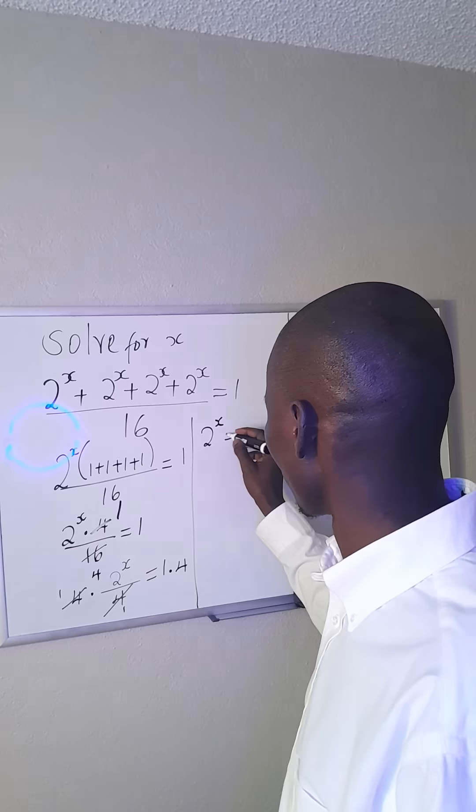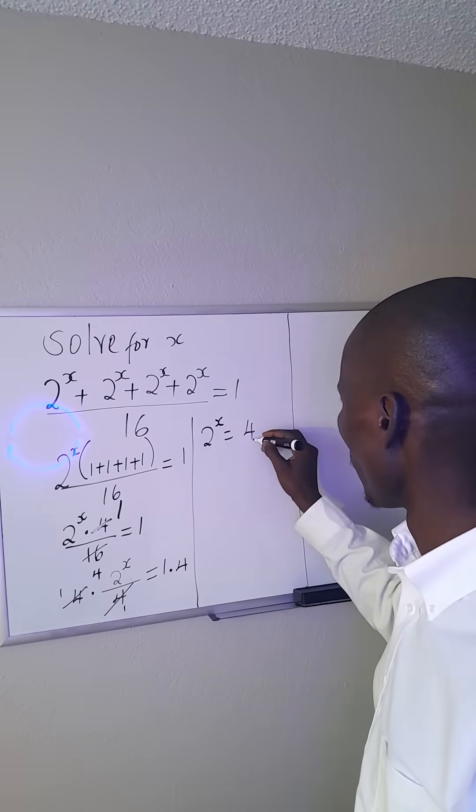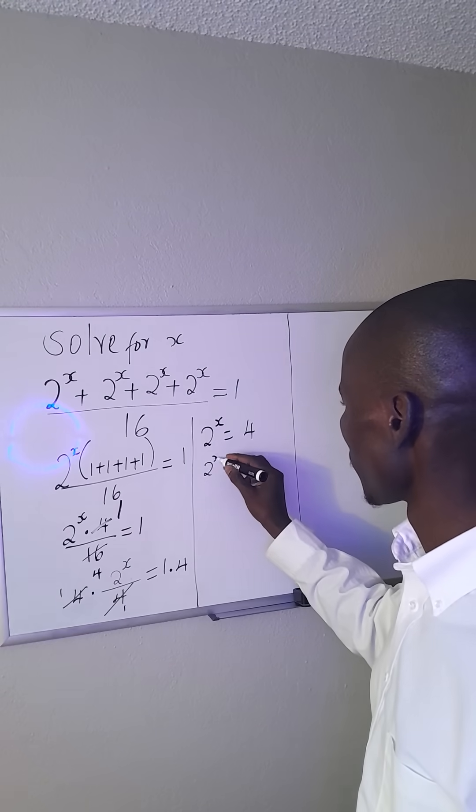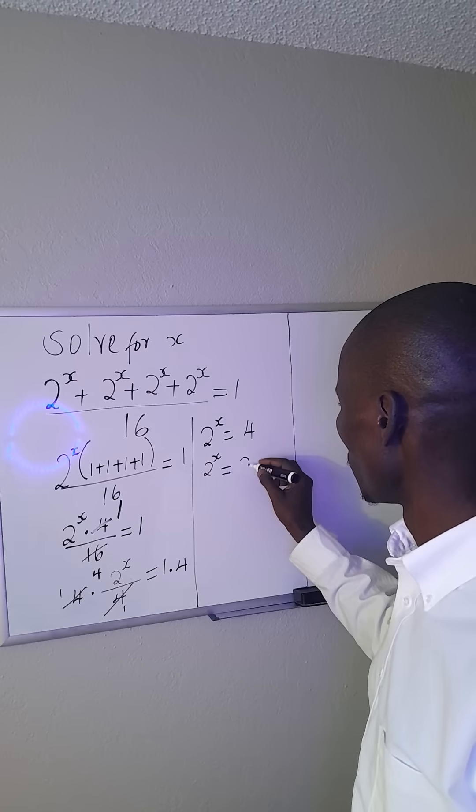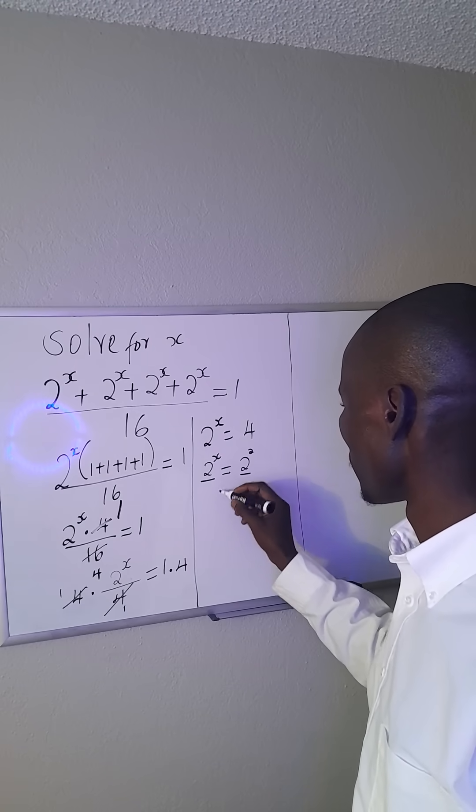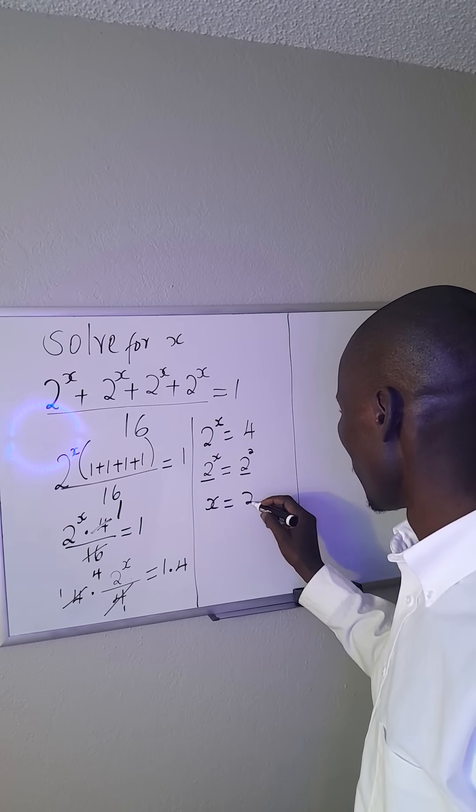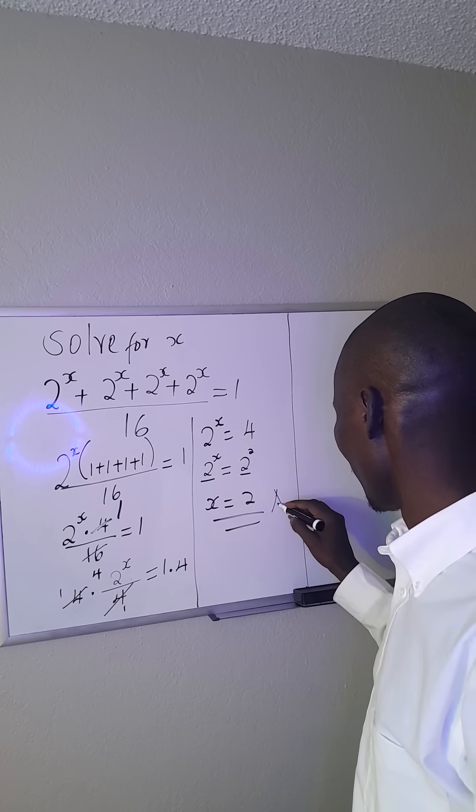Write the same base: 2^x is equal to 2^2. Same base, equate powers. What is the value of x? x is 2, and that is the end.